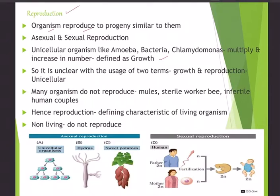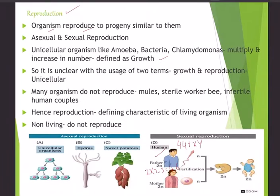Under asexual reproduction there are many types. In sexual reproduction, in case of human beings, the father is 2n — meaning diploid. 'n' represents one set of chromosomes; in humans n equals 23, so 2n equals 46 chromosomes. Both father and mother are diploid with 46 chromosomes (23 pairs): 44 autosomes and 2 sex chromosomes. In males (father), the sex chromosomes are X and Y, while in females (mother) they are XX.